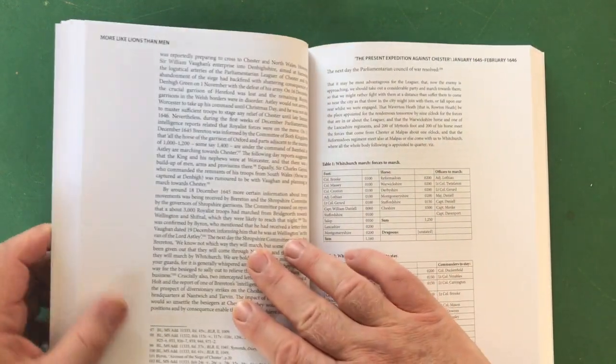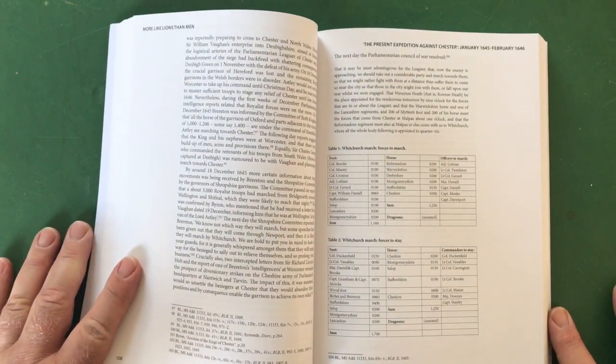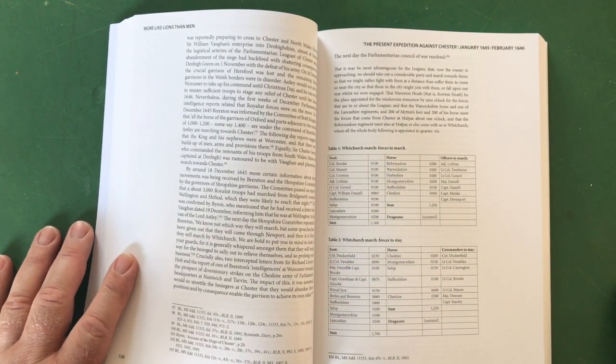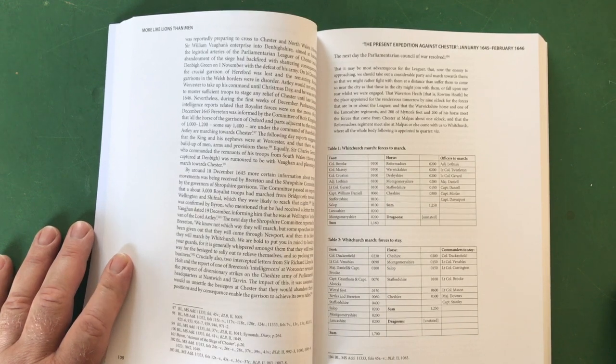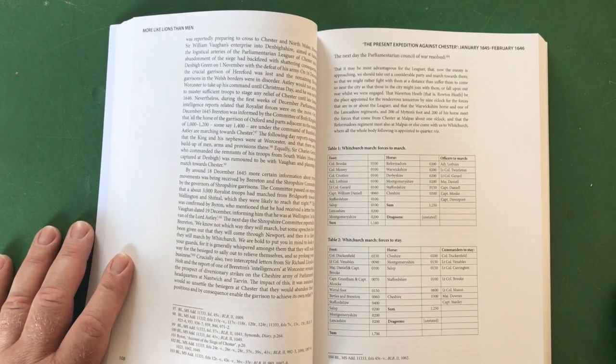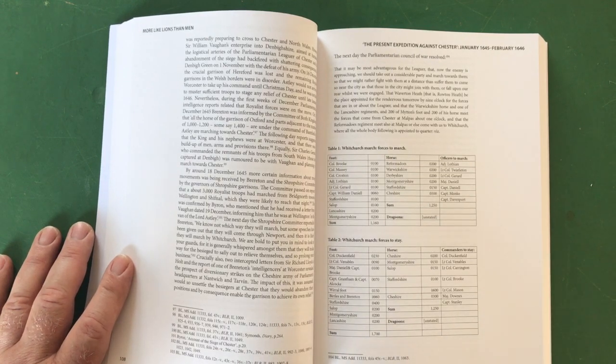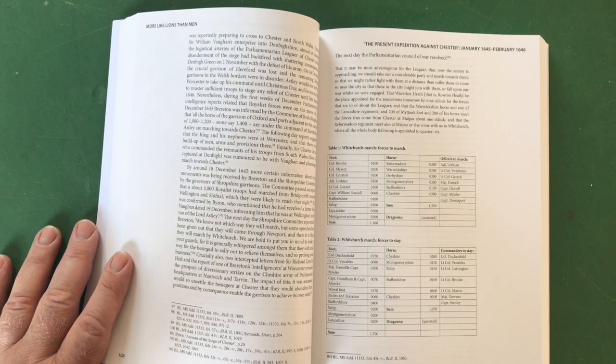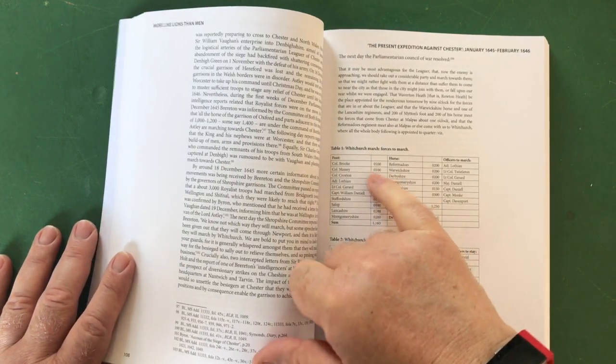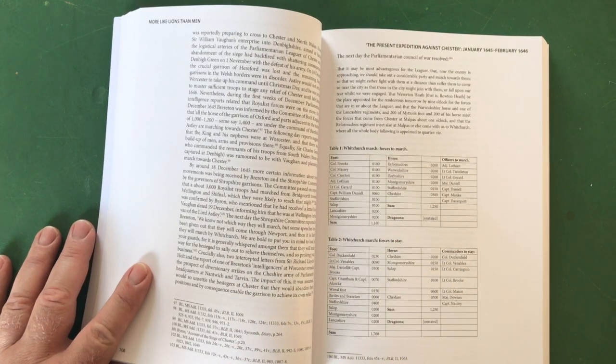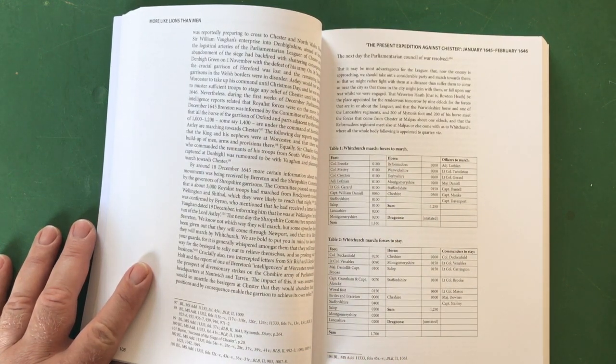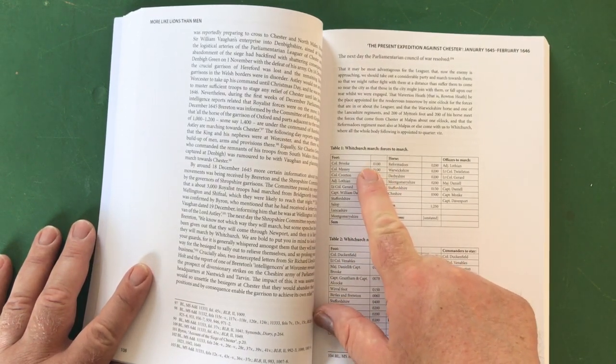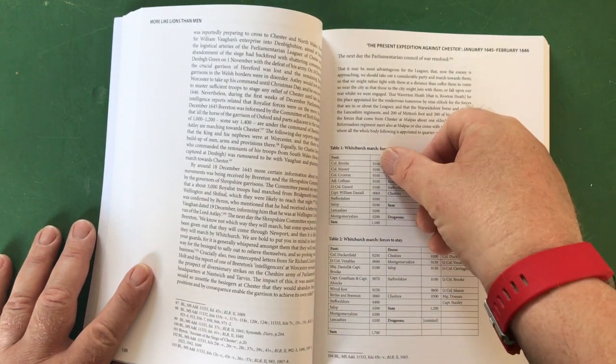This is where it starts getting interesting because the book contains a lot of tables and it basically shows the order of march and the number of troops. One of the things that slightly irritates me - I don't know if this is from the original sources but I find it a bit confusing - is that instead of just saying 100, they've got a zero in front.